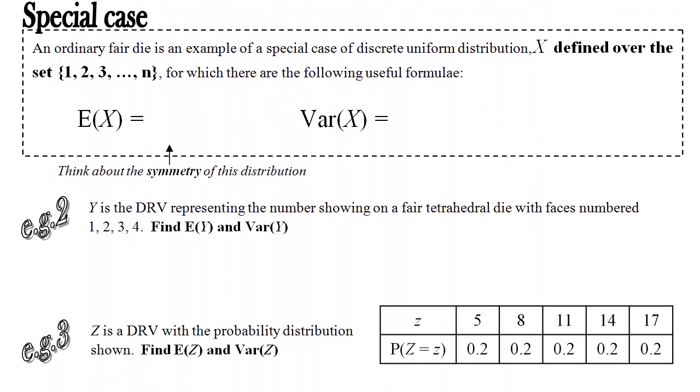Next we're going to consider a special case of the discrete uniform distribution. And an ordinary fair die is an example of this case. This is when x is defined over integer values, consecutive values 1, 2, 3, up to n, maximum value, which in this case for a dice would be 6.